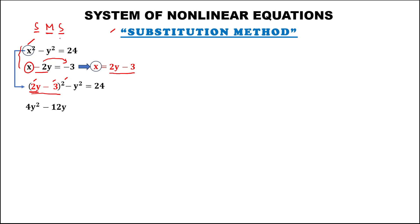Last S: square the last term — 3 squared equals positive 9. Then bring down the negative 2y squared, and transpose the positive 24 to the other side, making it negative 24, equals 0.